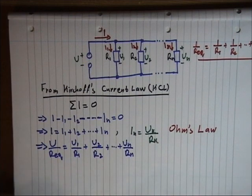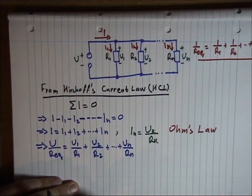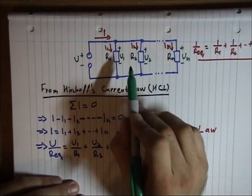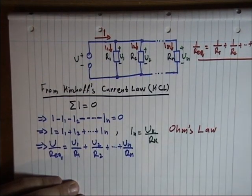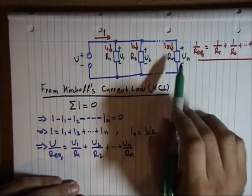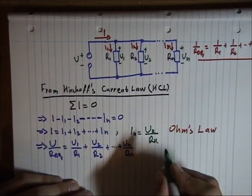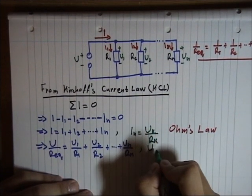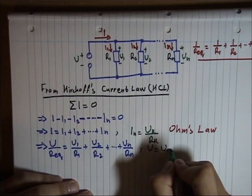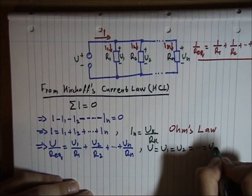We also know that in parallel topologies, the voltage of each individual element is the same with each other and the same with the source. So U is equal to U1 is equal to U2 equal to Un.